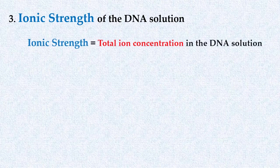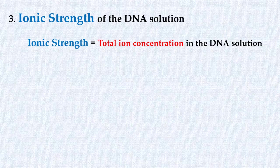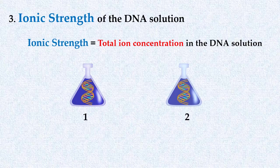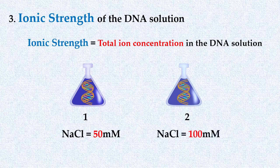Ionic strength here refers to the total ion concentration in the DNA solution. Suppose we have same DNA molecules in the given two DNA solutions. But the sodium chloride added in the first solution is 50 millimolar, and in the second solution, sodium chloride added is 100 millimolar. This means ionic strength in second solution is more than the first solution.